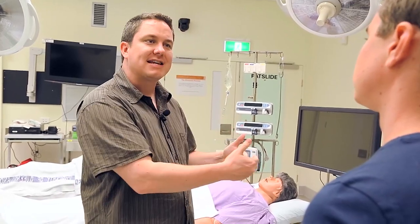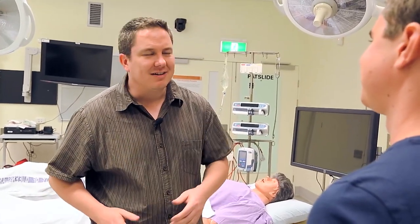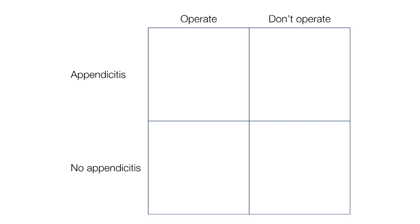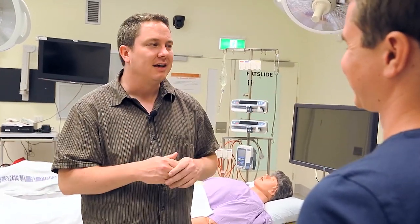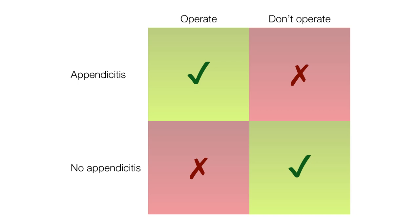If we go back to his example with appendicitis: if you're a patient complaining that your pelvis hurts and you go to the clinic and see a physician, they're either going to decide to operate or not on the basis of the information in front of them. So there are four possible outcomes, represented using a two-by-two contingency table. Essentially, you either have appendicitis or you don't, and the physician's either going to decide to operate or not.